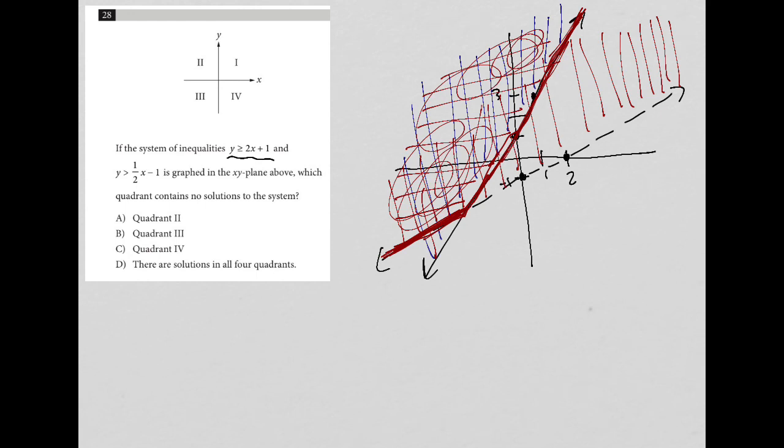So the quadrants that those are in is quadrant one. We have a little piece of quadrant one right here. We have a lot of quadrant two, basically all of quadrant two falls under our solution. And then we have some of quadrant three here. What we do not have solution is in quadrant four. So that's why the answer to this question is choice C, because that is the quadrant that contains no solutions to the system.